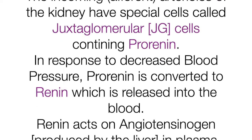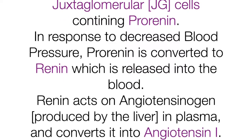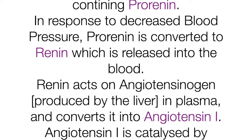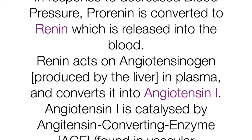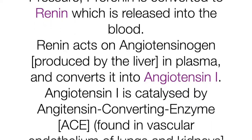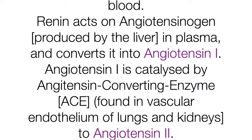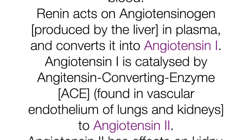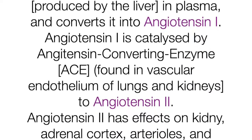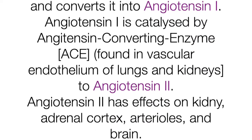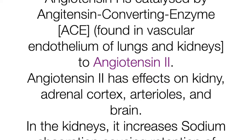Renin acts on angiotensinogen, produced by the liver in plasma, and converts it into angiotensin-1. Angiotensin-1 is then catalyzed by angiotensin-converting enzyme, found in the vascular endothelium of the lungs and kidneys, to form angiotensin-2.